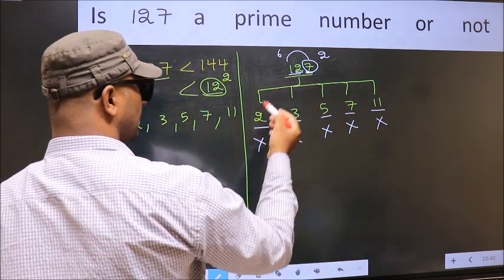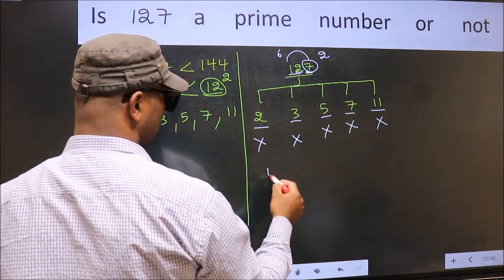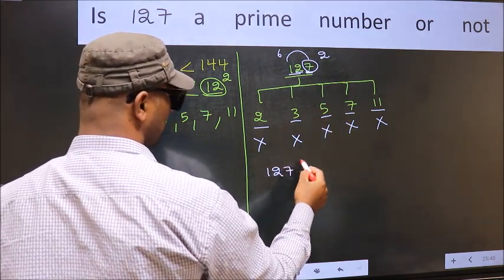So 127 is not divisible by any of these numbers. Hence, 127 is a prime number.